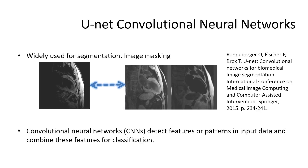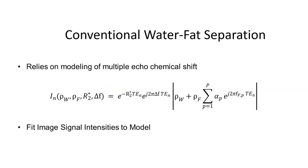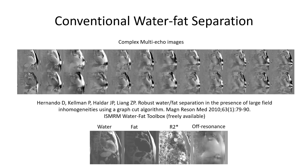We will see that with appropriate inputs, CNNs are capable of providing excellent water-fat separation. Conventional water-fat separation relies on modeling of multiple echo-chemical shift and fits image and signal intensities to this complex model. State-of-the-art methods utilize complex multi-echo images and not only provide water and fat images, but also R2 star and off-resonance maps as a byproduct.